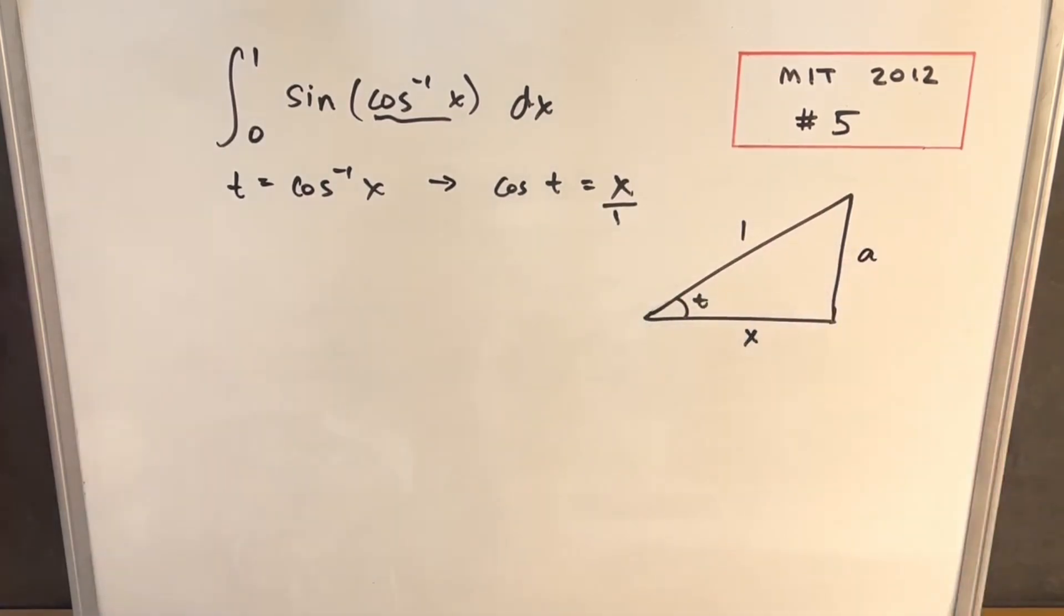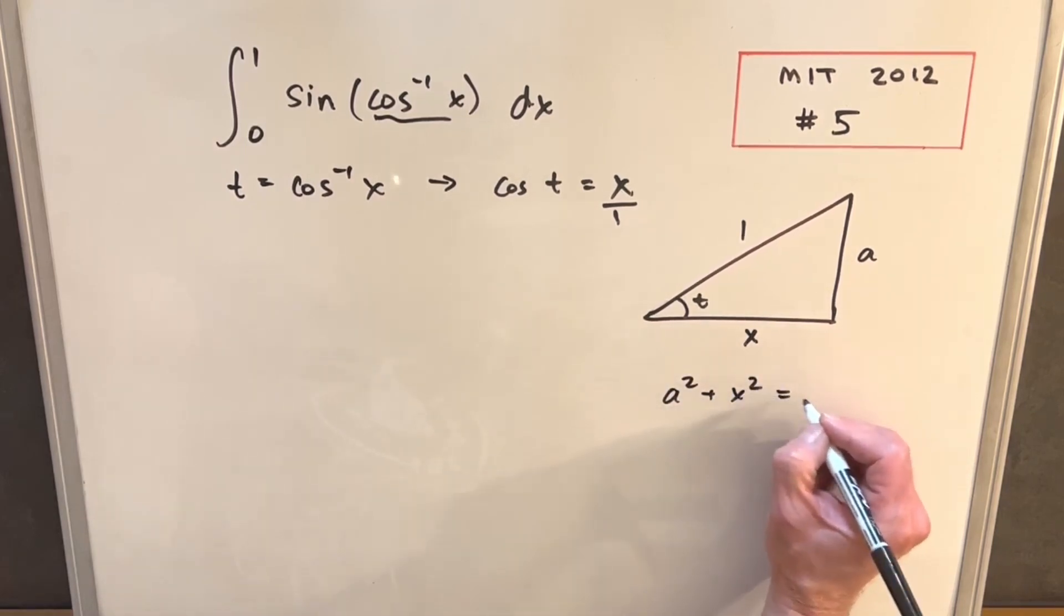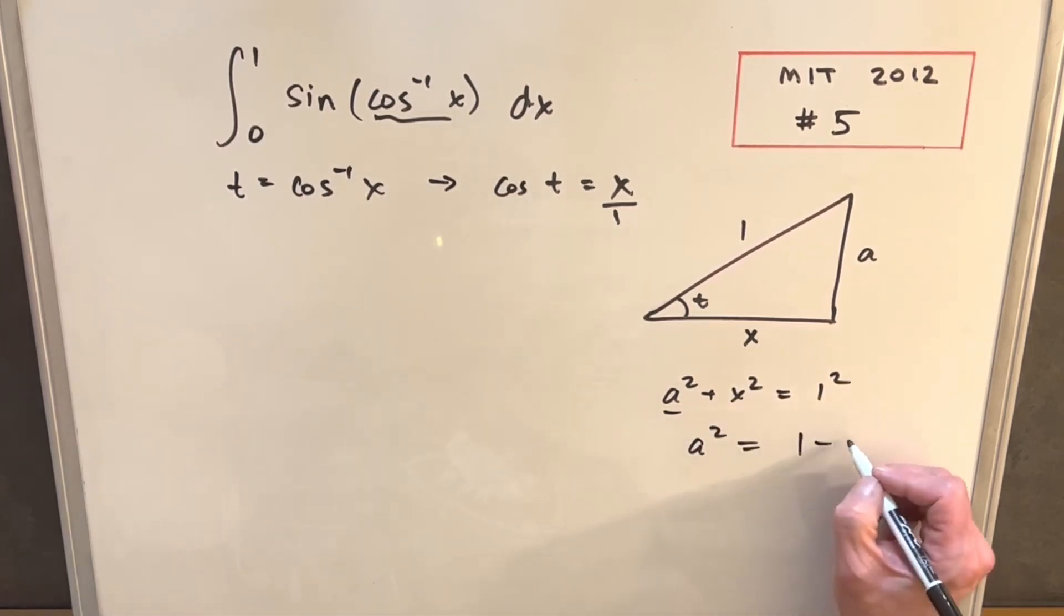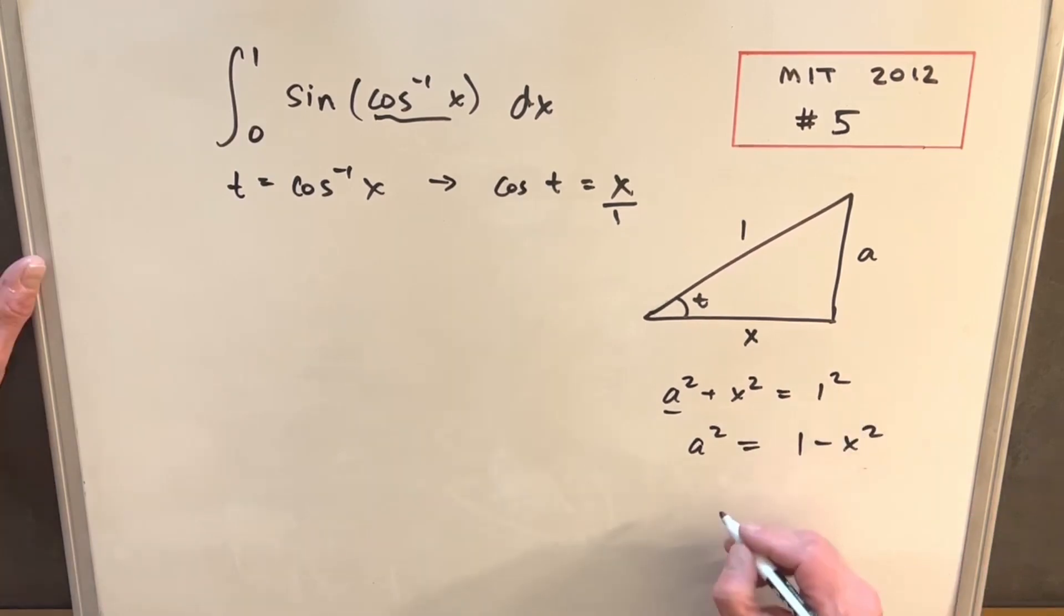What is this third side going to be? To find this third side, we'll use the Pythagorean theorem. That'll just be our side a squared plus x squared equals 1 squared. We just want to solve for this a. We'll have a squared equals 1 minus x squared. Then taking the square root, we'll have a equals square root of 1 minus x squared.